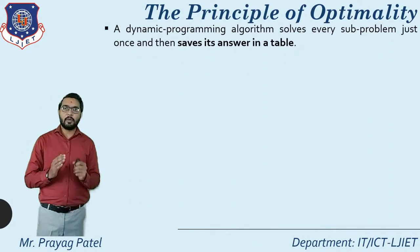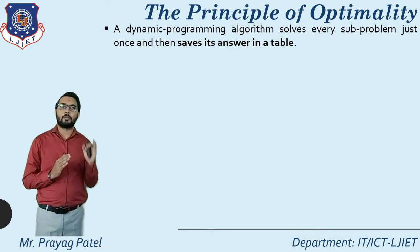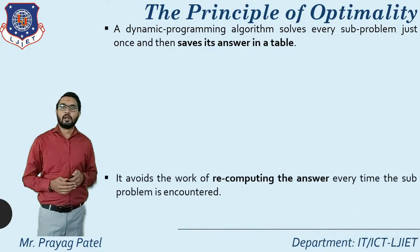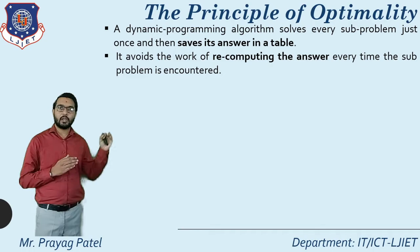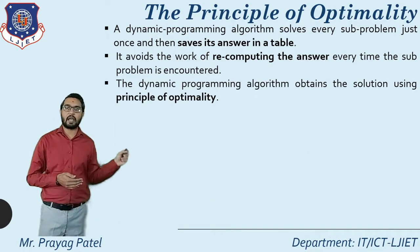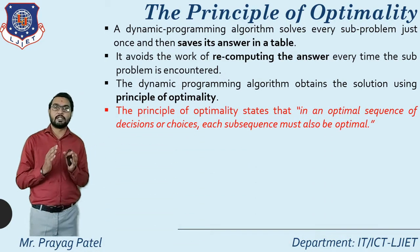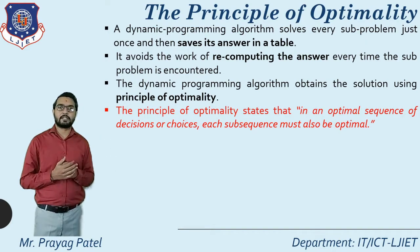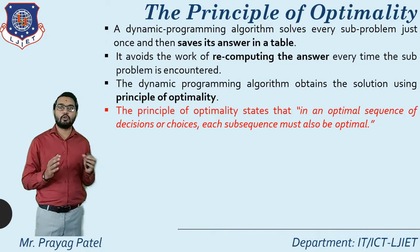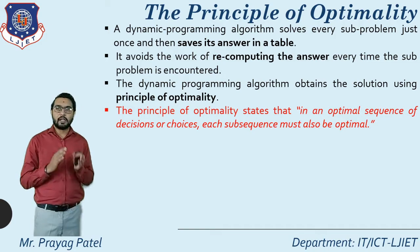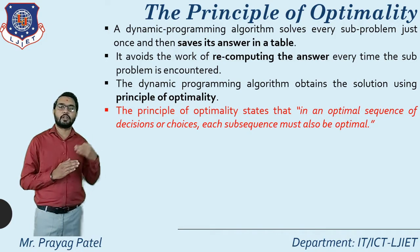Now consider the principle of optimality. A dynamic programming algorithm solves every problem under this principle: your problem is evaluated once, the result is stored in a table, and recomputation is avoided. The principle of optimality states that in an optimal sequence of decisions or choices, each sub-sequence must also be optimal. If the global solution is optimal, then each sub-solution must also be optimal.